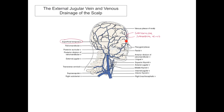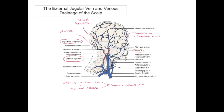The supratrochlear and supraorbital veins ultimately join with the facial vein, as we see here. We also see the posterior occipital veins and the posterior auricular veins. It's the joining of the posterior auricular with the superficial temporal that gives us the external jugular vein, which runs in the superficial cervical fascia of the neck, laterally to drain into the subclavian vein.